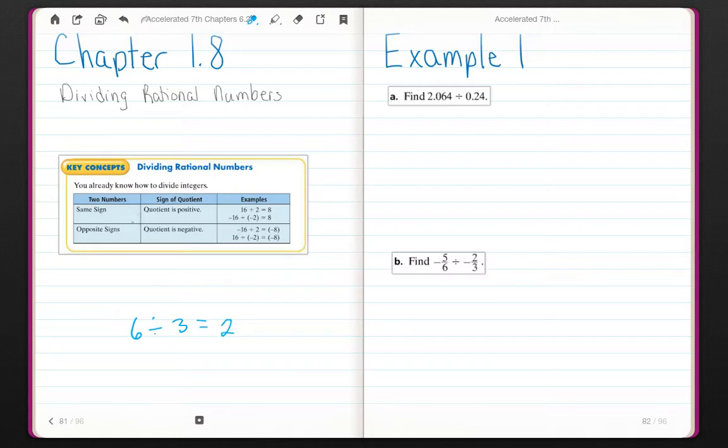Don't forget your rules about signs. If your signs are the same, like 6 divided by 3, positive divided by positive, your quotient is positive. Negative 6 divided by negative 3, your answer is still positive 2. If they have the opposite sign, then your quotient will be negative. If one of your two, either your dividend or your divisor is negative, your quotient is also negative.